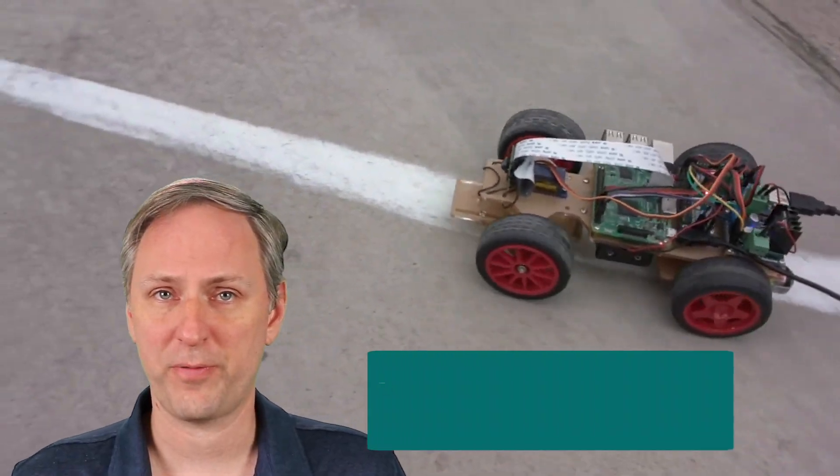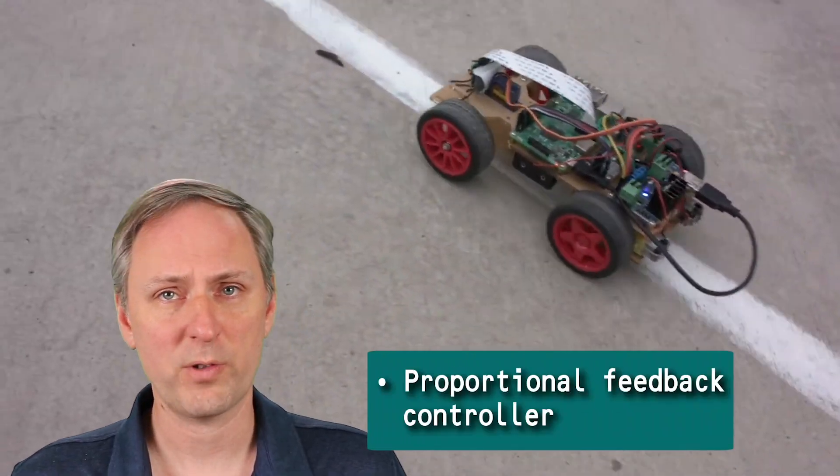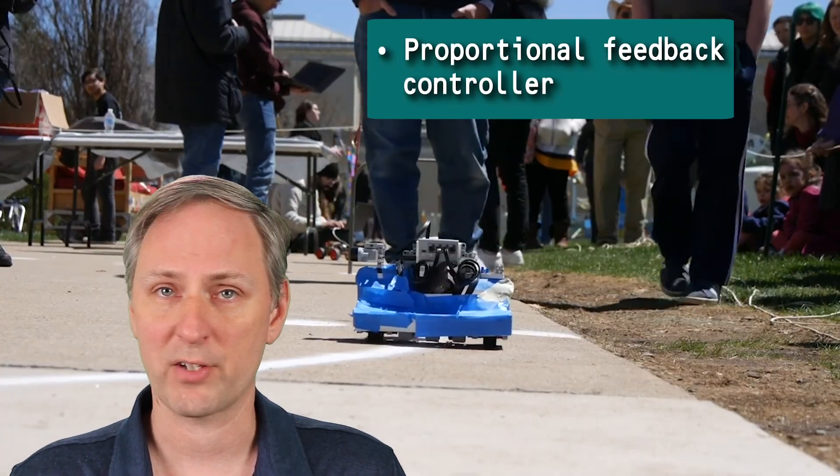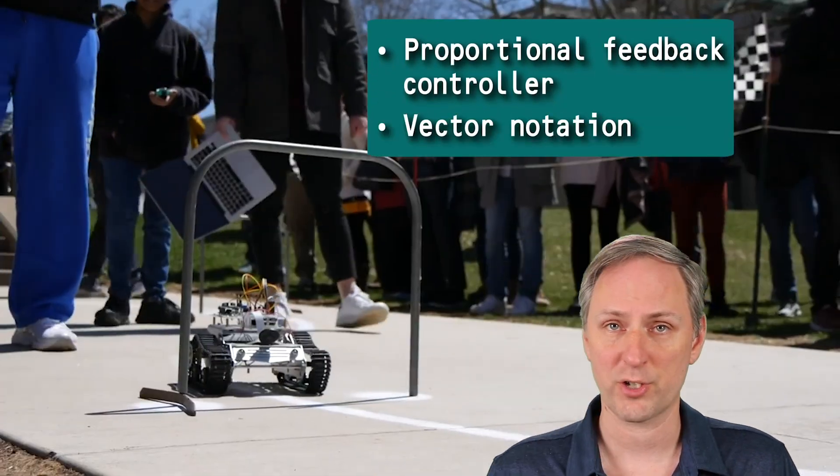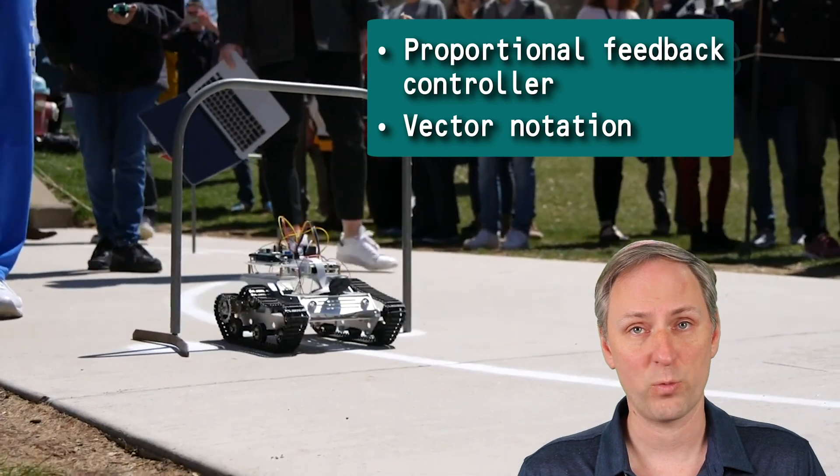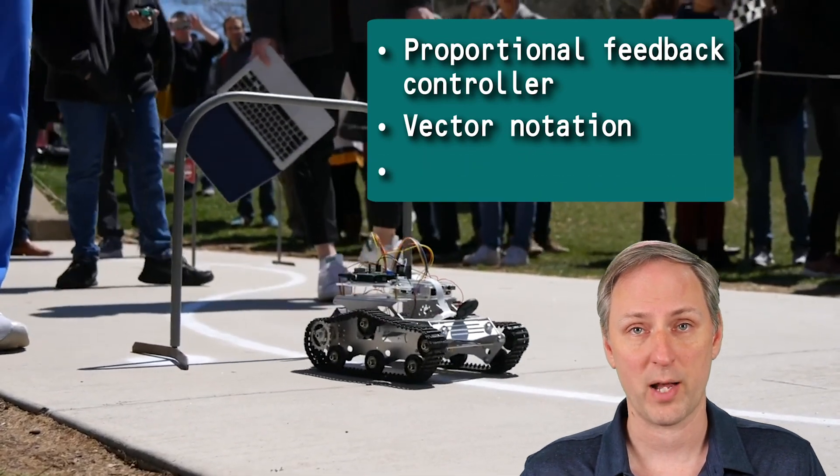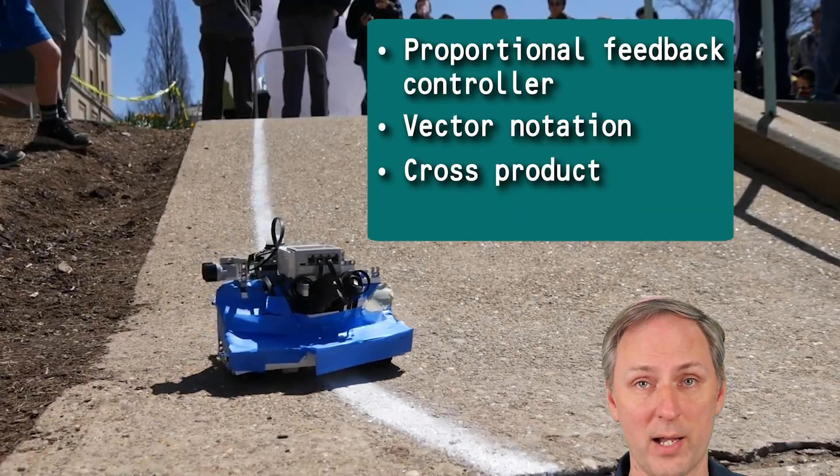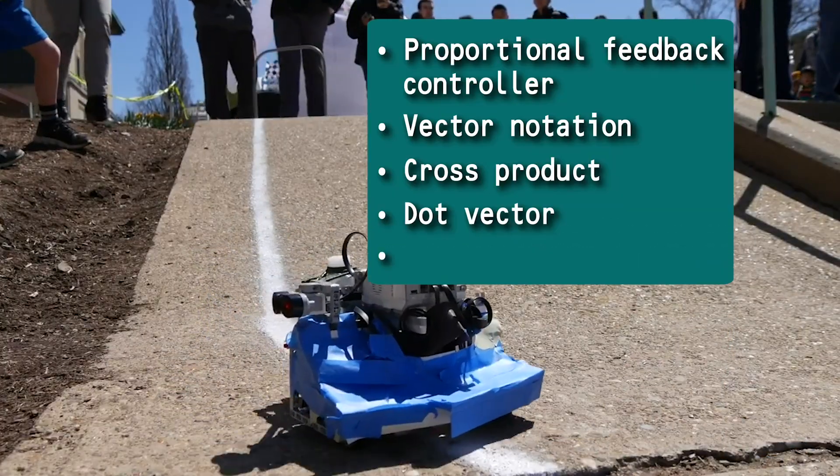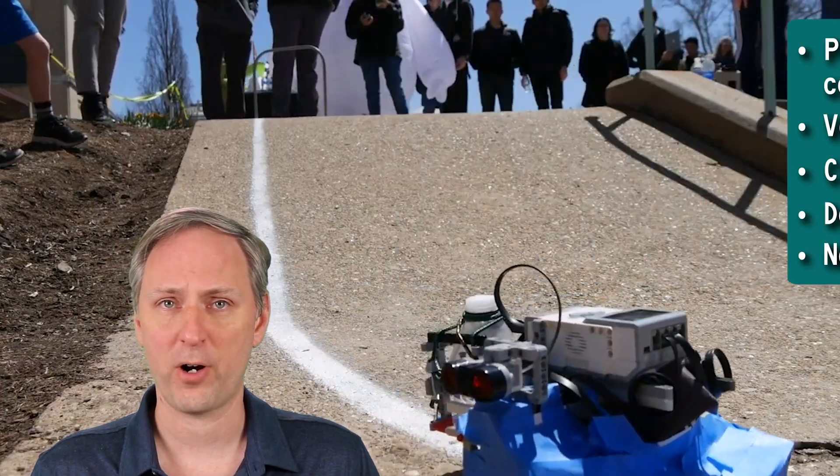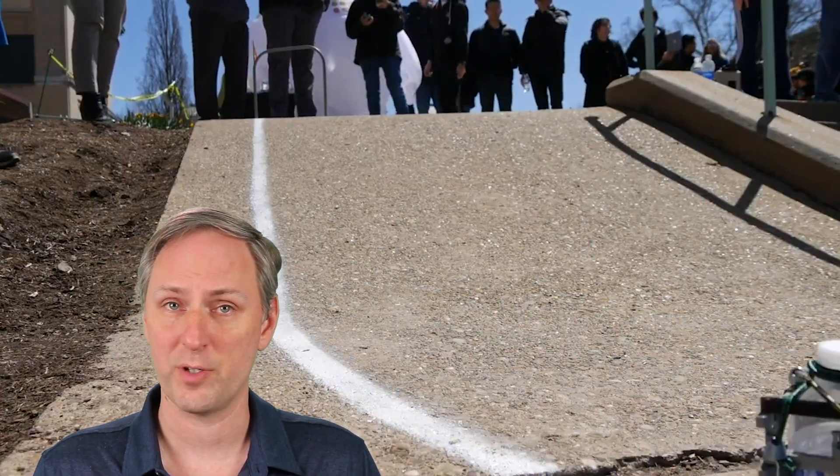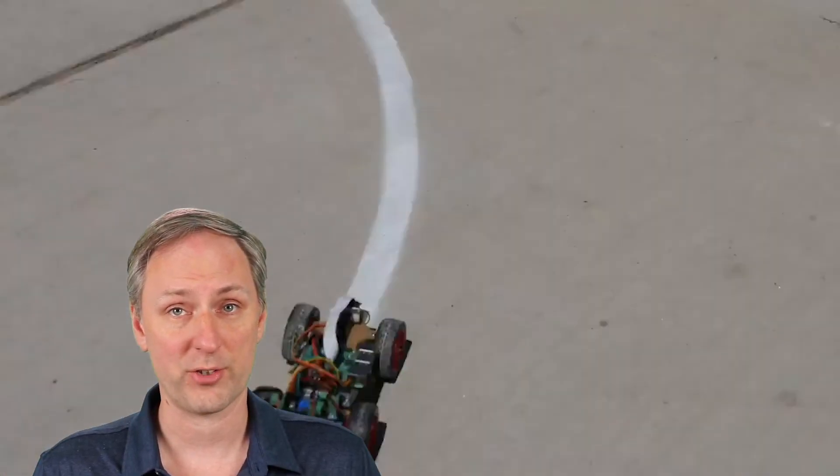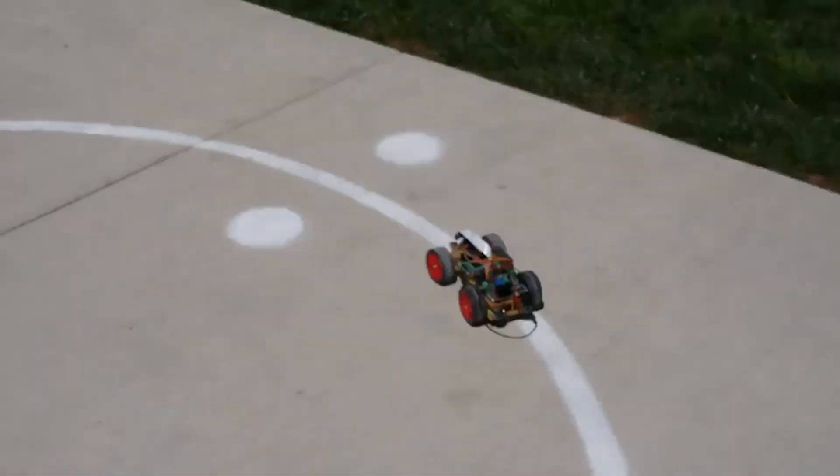Our robot can now successfully follow a line. We have looked at the elements that make up a proportional feedback controller, and have examined how to use the vector notation for a line to find which side we are on using the cross product, and how far away from the line we are using the dot product in the normal vector. With these tricks, the robot knows how far off and in which direction from the desired line it is. The robot also knows how to adjust the steering motor commands to get back on track.